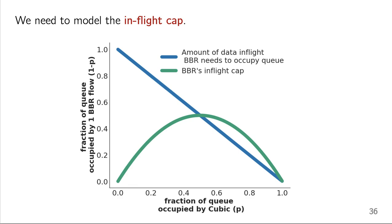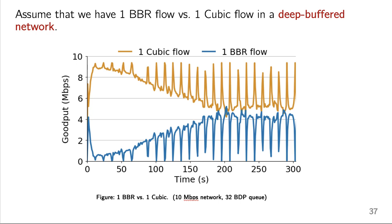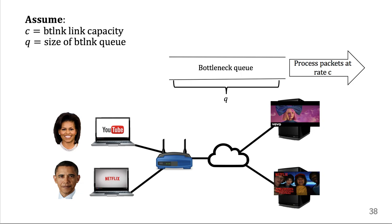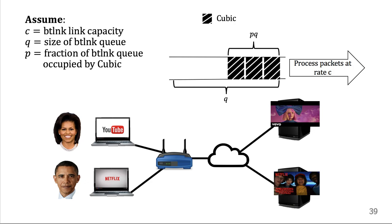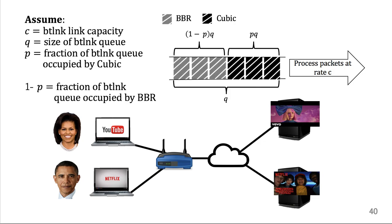Assume here we're going to make really simplifying assumptions that we have one BBR flow versus one cubic flow. And we're in a network where the queue size is very, very large. So in the example I've been showing you so far, this is a 32 BDP queue. So it's very, very large. Okay, so let's define some variables. So here we have the bottleneck link capacity is C, and the bottleneck Q size is Q, illustrated here at the top as well. And the P fraction of the bottleneck Q is occupied by cubic. And we're just going to assume the rest of the Q is occupied by BBR. All right, super simple.